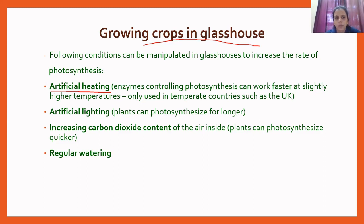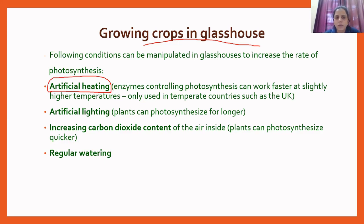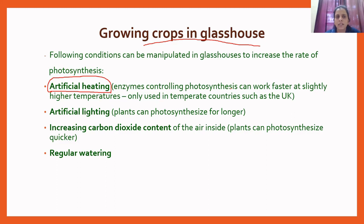In order to grow tomatoes, artificial heating is done in the glass house. This slight increase in temperature increases the activity of enzymes in the tomato plant cells. Due to artificial heating, enzymes can work faster, and as enzymes work at a faster rate, the rate of photosynthesis also increases.